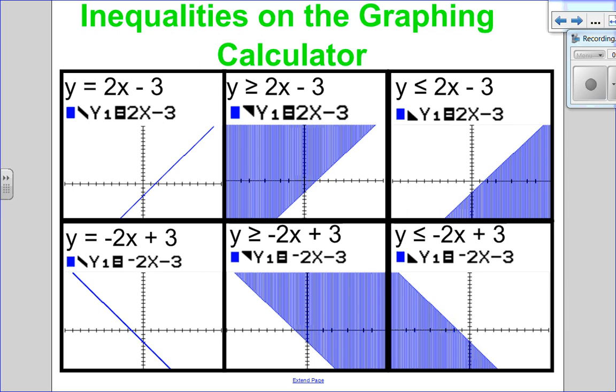Now because this is shading, you'll notice on the other side of the y equals, this is normally what y equals look like, and we have just this symbol here for a line. But if we actually go to the left of y equals, you can have an upper triangle, which means you're shading above, or a lower triangle, which means you're shading below. To do that, you just go to the left of your y equals and press enter to toggle through all the different symbols.